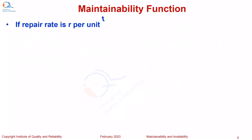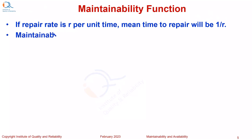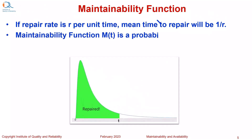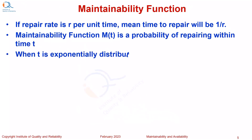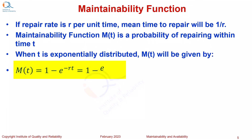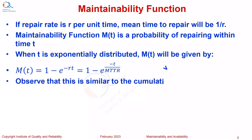If repair rate is R per unit time, mean time to repair will be 1 upon R, that is the reciprocal of R. Maintainability function M of t is the probability of repairing within time t. When t is exponentially distributed, M of t will be given by 1 minus e raised to minus R times t, or we can also write it as 1 minus e to the power minus t upon MTTR. Observe that this is similar to the cumulative failure function, capital F of t.